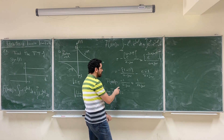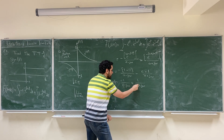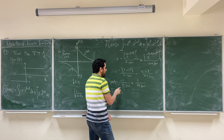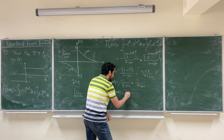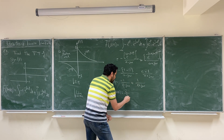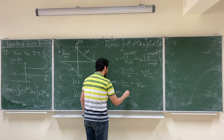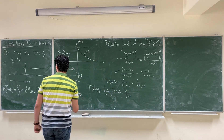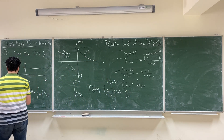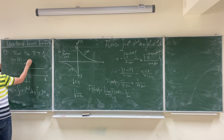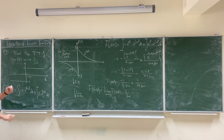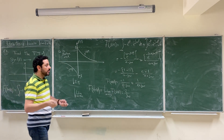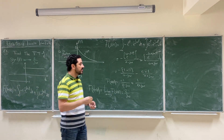Taking the limit as a → 0: the term −1/(a−jω) becomes 1/(jω), and 1/(a+jω) becomes 1/(jω) as well, so it gives 2/(jω). Therefore, the Fourier transform of the signum function is 2/(jω). This is a very important special case.